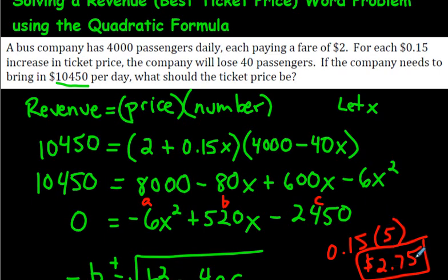If the question also asked how many tickets would be sold: 5 increases times 40 lost passengers equals 200 fewer passengers, so 4,000 minus 200 = 3,800 tickets sold at $2.75. That gives us the revenue of $10,450 that we were looking for. $2.75 is the ultimate selling price.